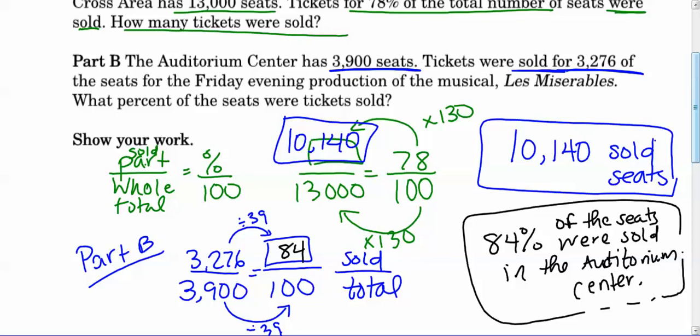So to the right in the blue box, it says 10,140 sold seats. All right. And again, you'll notice with part two, the numbers are a little bit bigger because I'm giving a calculator. No excuse for getting that math wrong. You can plug it right into a calculator.